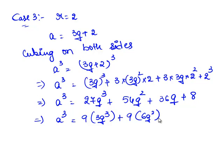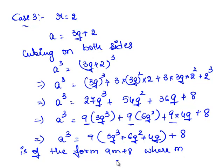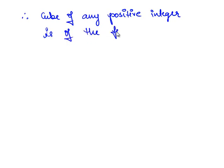We can write 54q² as 9 times 6q² and 36q as 9 times 4q. Since 9 is a common factor in the first three terms, we bring it out and are left with 9 times (3q³ plus 6q² plus 4q) plus 8. This is of the form 9m plus 8, where m equals 3q³ plus 6q² plus 4q. Therefore, the cube of any positive integer is of the form 9m, or 9m plus 1, or 9m plus 8. Hence proved.